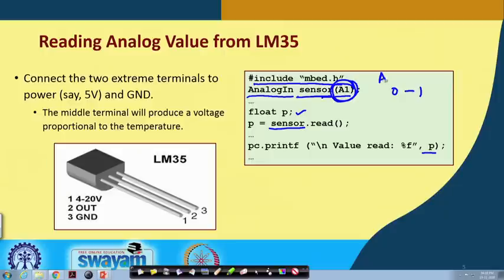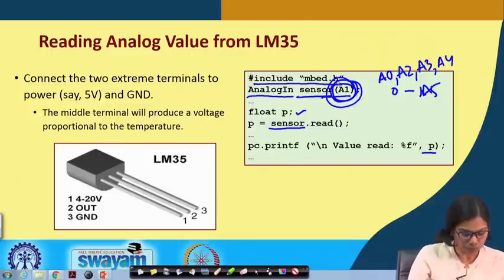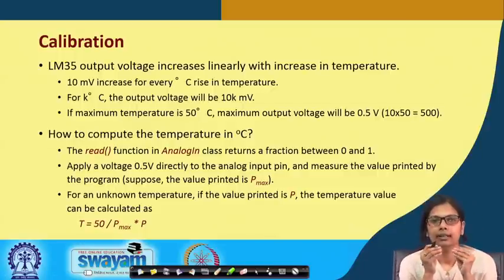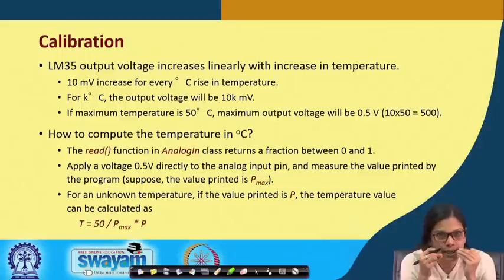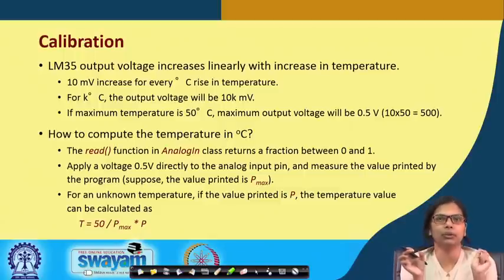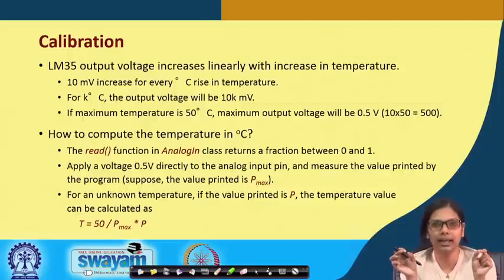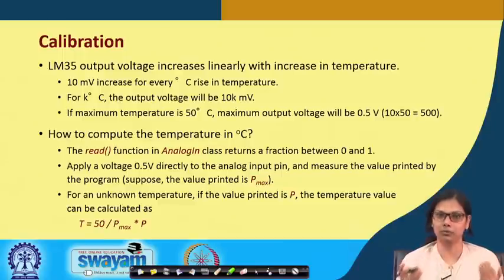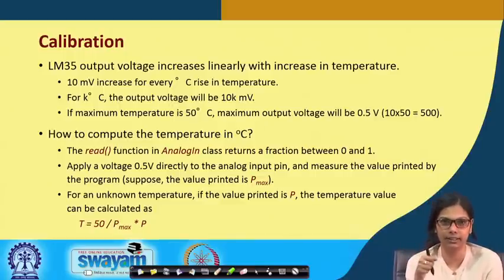There are other analog ports as well: A0, A2, A3, A4, and A5. In this case we are connecting to A1. Now, how do we do this calibration? Let us say the current temperature of the room is x — for that current temperature, what value are we getting? If we know the temperature is 20 degree centigrade and we are getting a certain value in the analog output, then for an unknown temperature producing value x, we can compute the temperature. This calibration is one way of doing it.